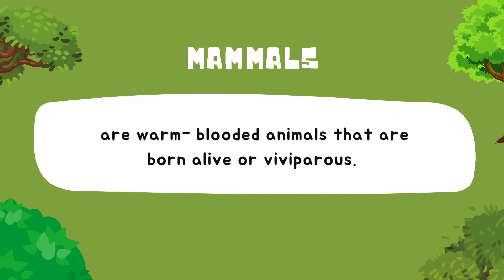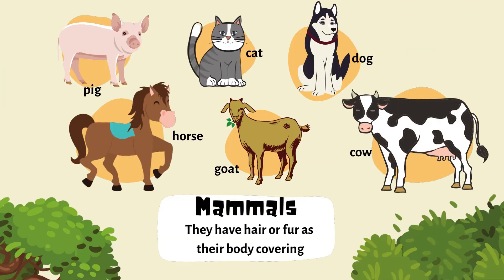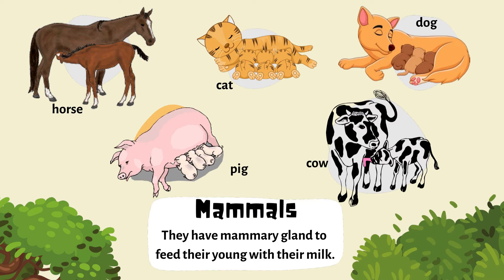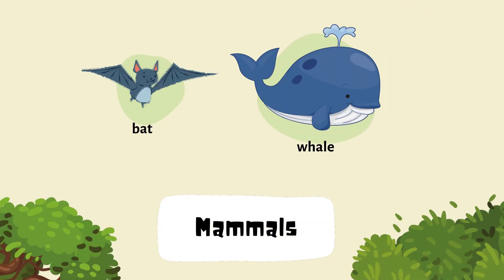Mammals are warm-blooded animals that are born alive, or viviparous. They have hair or fur as their body covering, like pig, horse, goat, cat, dog, and cow. They have mammary glands to feed their young with their milk. Most of the mammals have four legs, but there are also mammals that can fly or swim, like bat and whale.